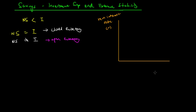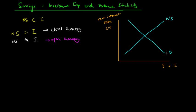This graph maps the level of real interest rate against domestic savings and investment. The upward sloping curve is the supply curve — in this case, the supply of money in the economy, which is also denoted as national savings (NS). The downward sloping curve, which is usually the demand curve, represents investment, because businesses demand national savings so that they can invest.